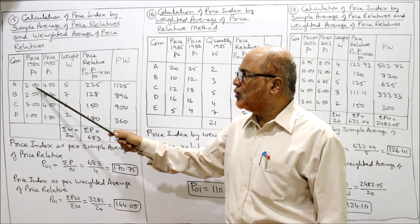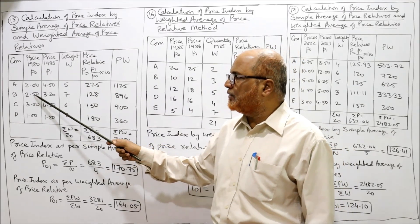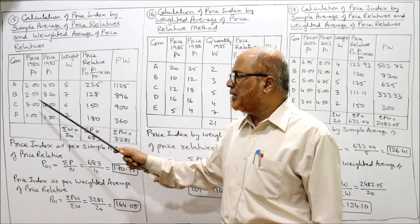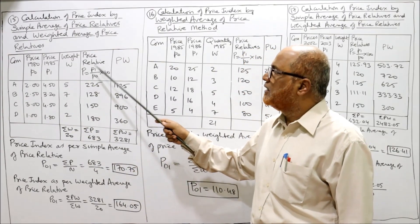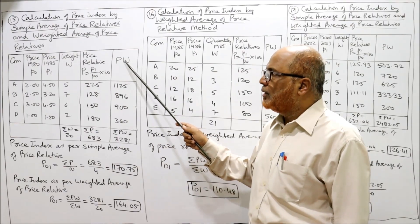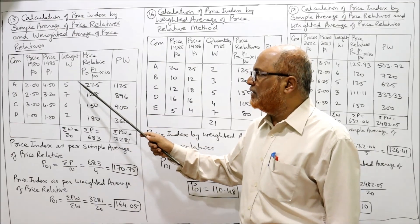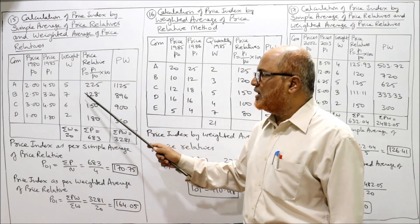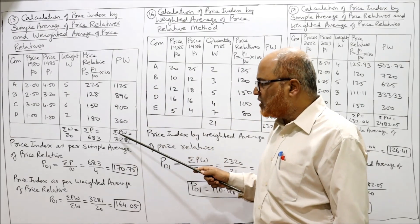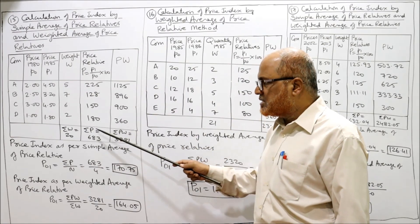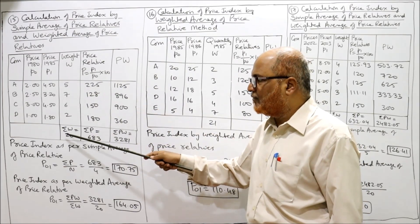Price relative means percentage of current year price over base year price: P1 by P0 into 100. For example, 4.5 divided by 2 into 100 gives 225; 3.2 divided by 2.5 into 100; 4.5 divided by 3 into 100 — this gives us price relative P. Now one more column: PW, which is P multiplied by W. So 5 into 225, 7 into 128, 6 into 150, 2 into 180. Take the total: summation PW is 3,281; summation P is 683; summation W is 20.